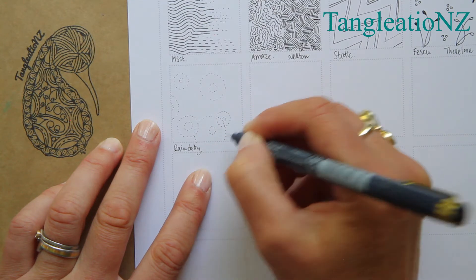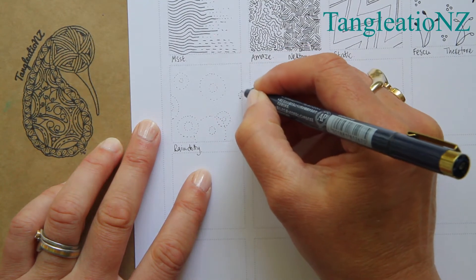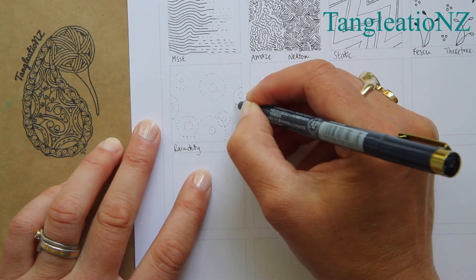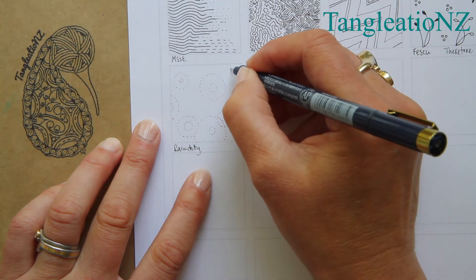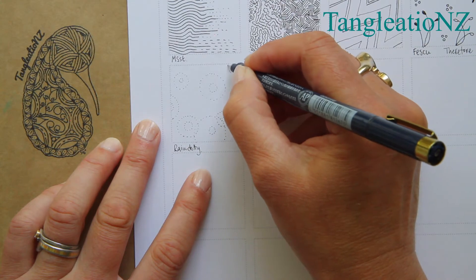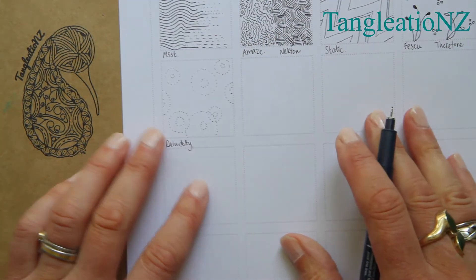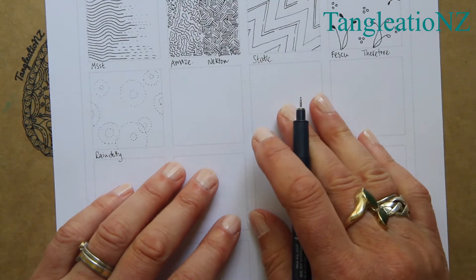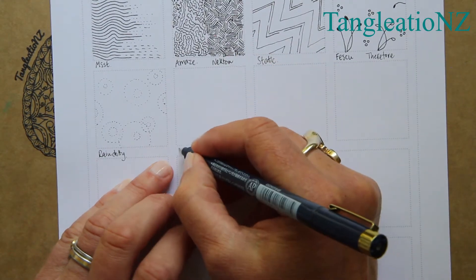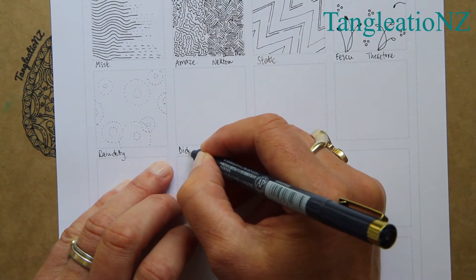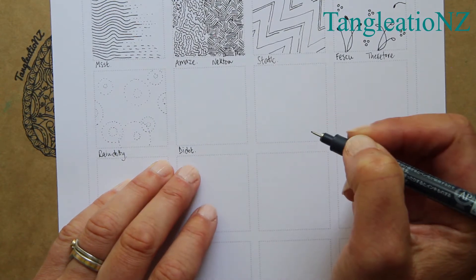Really simple deliberate dots as we begin to build them into a section. This is a really cute tangle for popping in the background. It doesn't detract from the tangling you've been doing. The way I like to think about Rain Dotty is it has a lovely cousin called Didot.